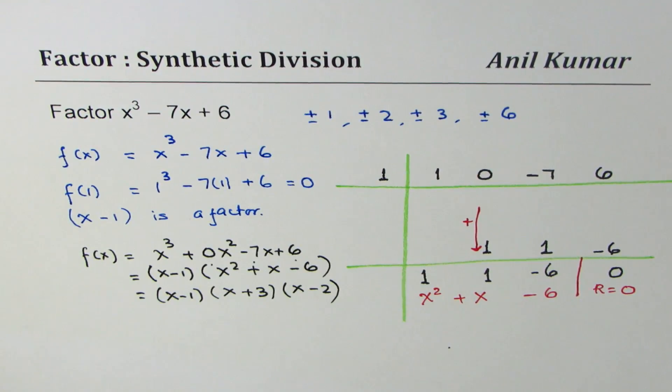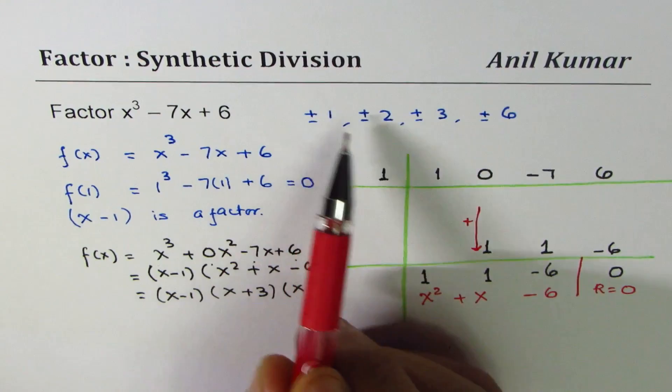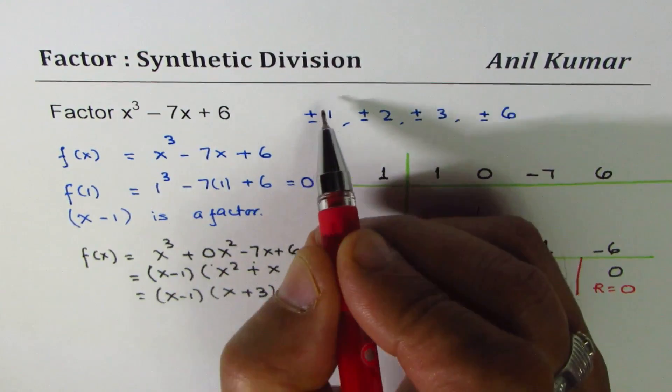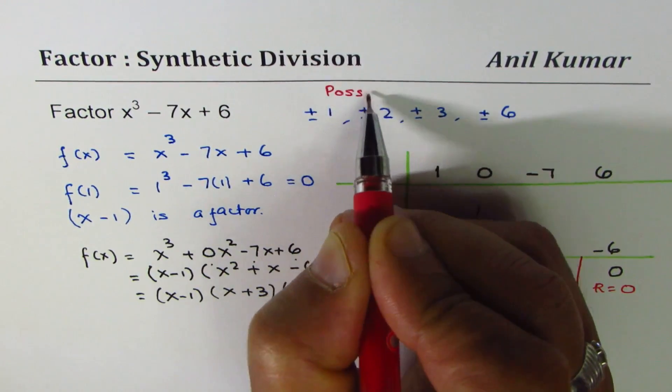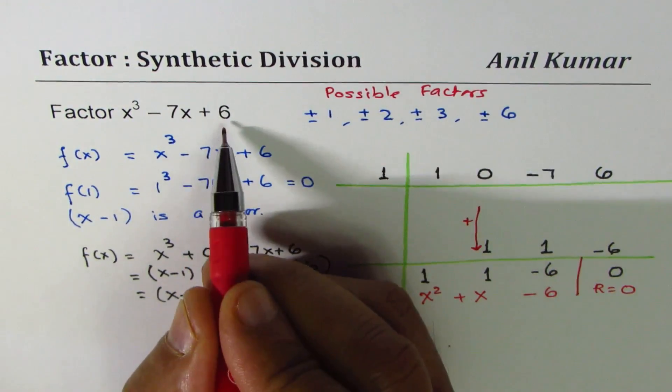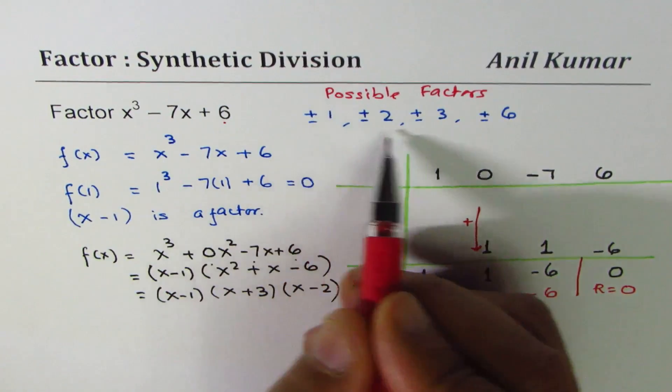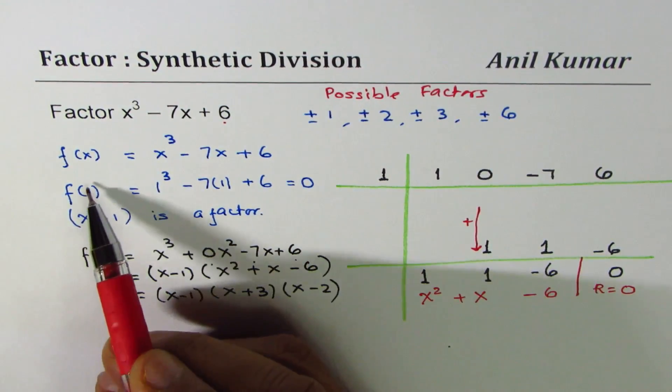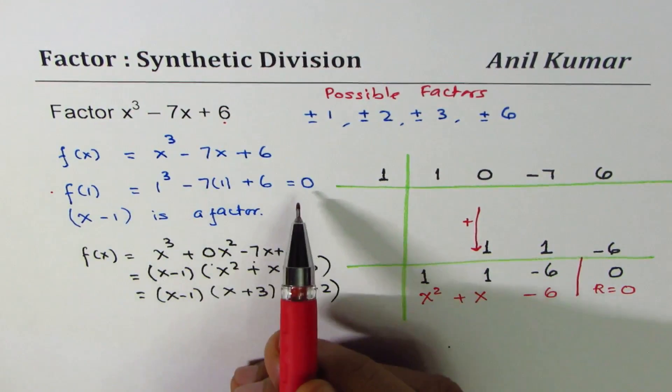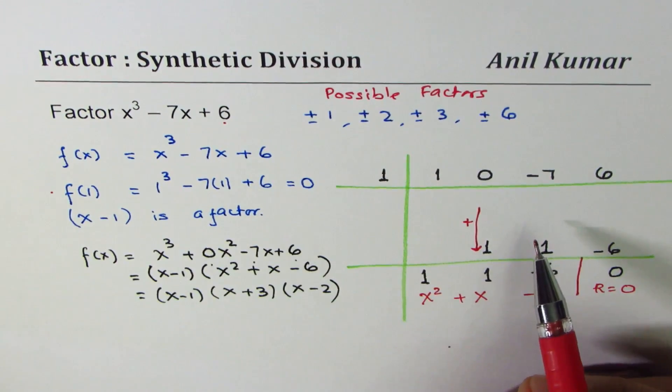So that is the factored form for the given polynomial. I hope you understand these steps very clearly. The idea is first identify all the possible factors, which are factors of the constant. The leading coefficient is 1 and therefore they are not divided by any number. Try them one by one. We were lucky to get the first one as 0. Once you get a factor, perform the synthetic division.